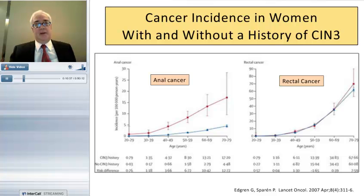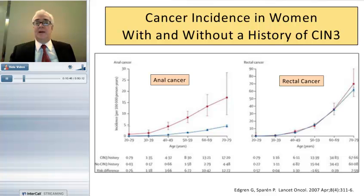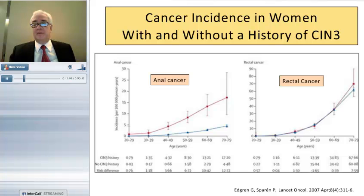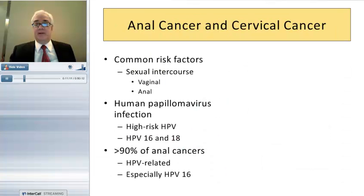Another group to consider is women who have had anogenital HPV infection at a non-anal site. Women with a history of CIN3 have a higher risk of anal cancer than those without, because they share a common risk factor in HPV infection. In contrast, we see no difference between women with or without a history of rectal cancer, which isn't surprising since rectal cancer, unlike anal cancer, is not considered an HPV-related lesion.